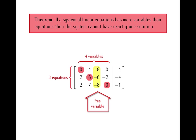And if we have a free variable, then the system cannot have exactly one solution. It may happen that a system with more variables than equations will have no solutions, since one of the pivot positions may appear in the column of constants, giving us an inconsistent system. But in any case, it will never happen that a system with more variables than equations has exactly one solution, and this is what this theorem says.